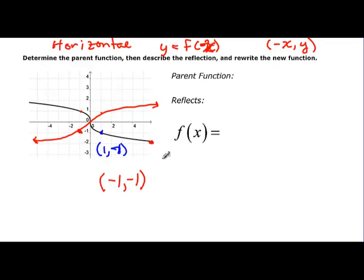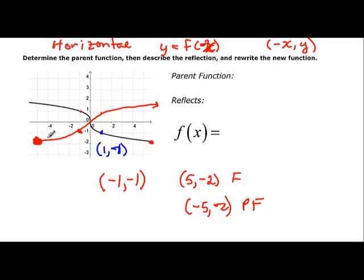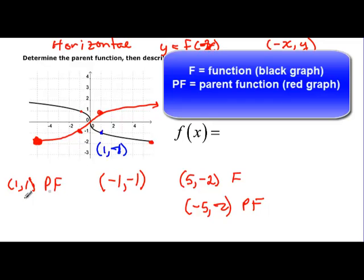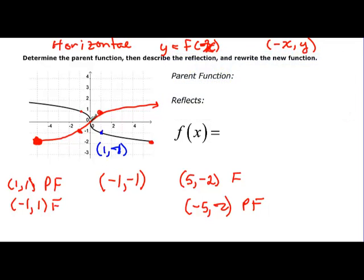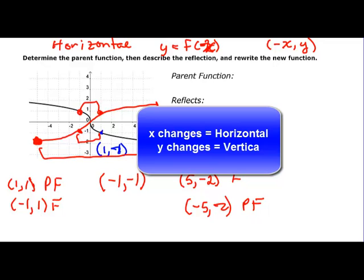This point right here looks like maybe (5, −2). That's on my function, and then we should have (−5, −2) on the parent function — sure enough, there it is. If we wanted to see one up here, we'd have the point (1, 1) on my parent function. Then on my function I should have (−1, 1) — the black graph. Negative 1, 1 — sure enough, there they are. Find a point, look to see what changed: did my x change or did my y change? You'll know which reflection you have.